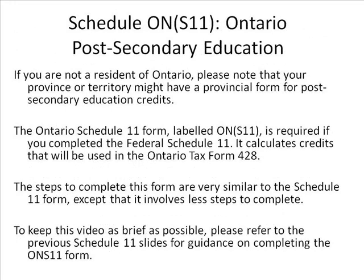Schedule ONS11, Ontario Post-Secondary Education: if you are not a resident of Ontario, your province or territory might have a provincial form for post-secondary education credits. The Ontario Schedule 11 form labeled ONS11 is required if you have completed the Federal Schedule 11. It calculates credits used in the Ontario Tax Form ON428. The steps are very similar to Schedule 11 but involve fewer steps; please refer to the previous Schedule 11 guidance for completing this form.